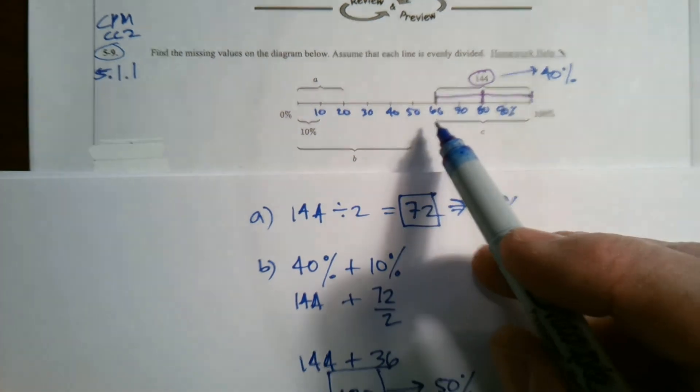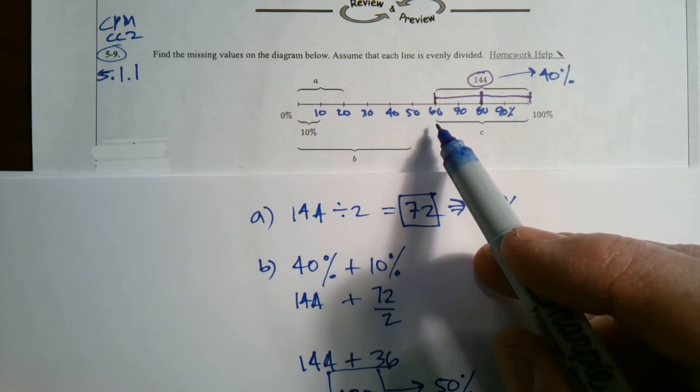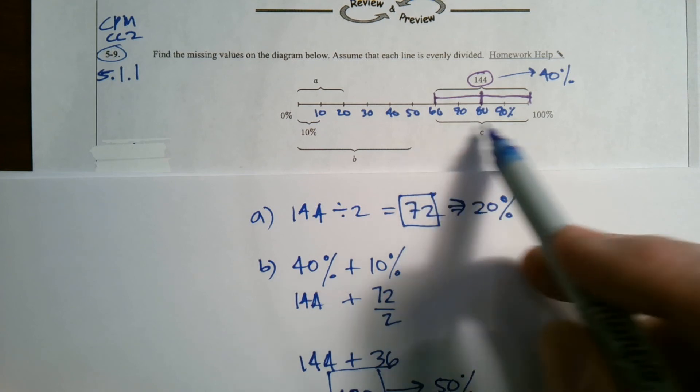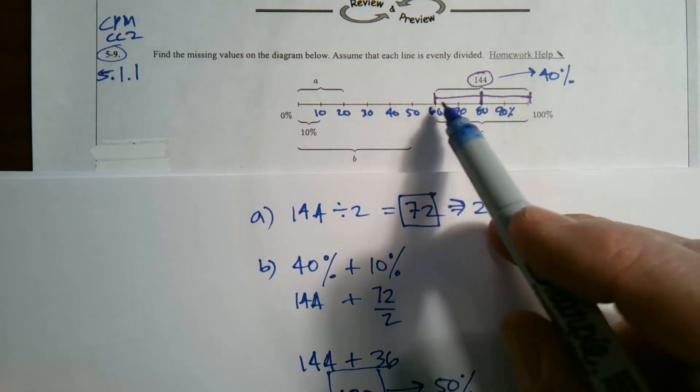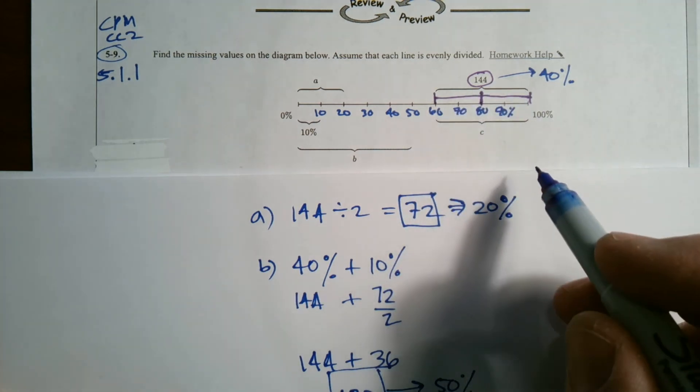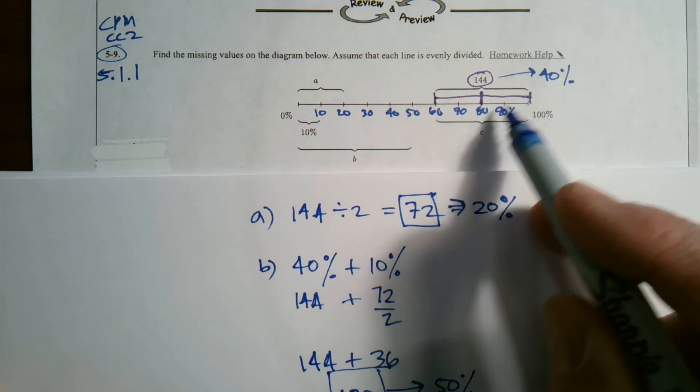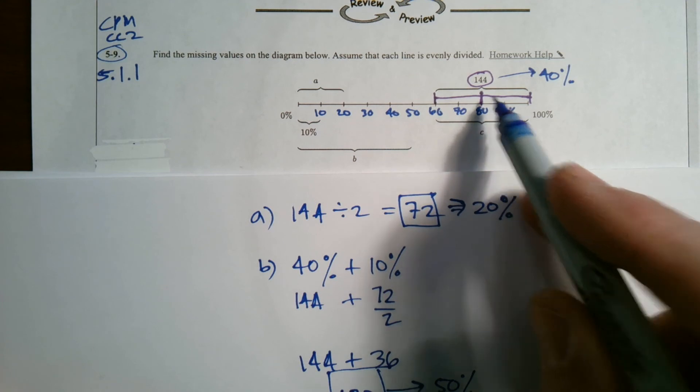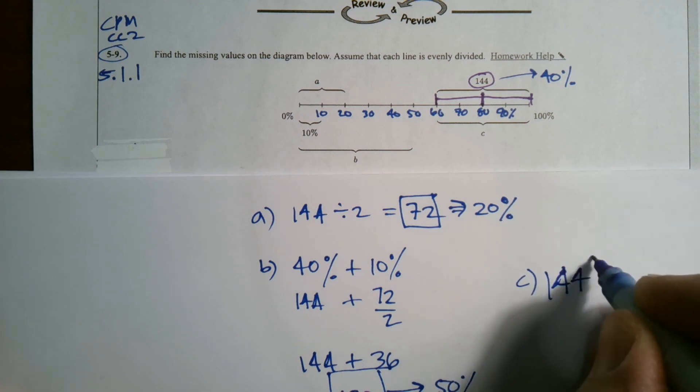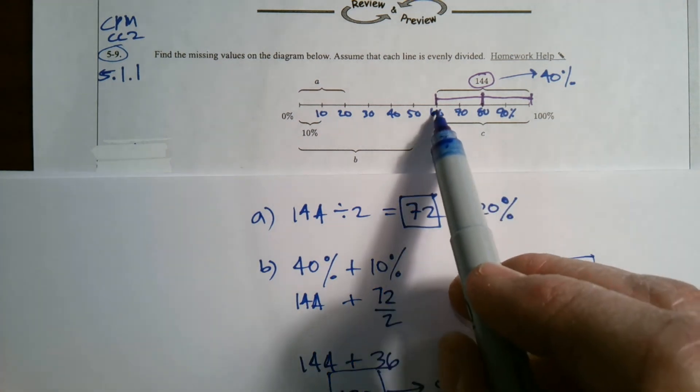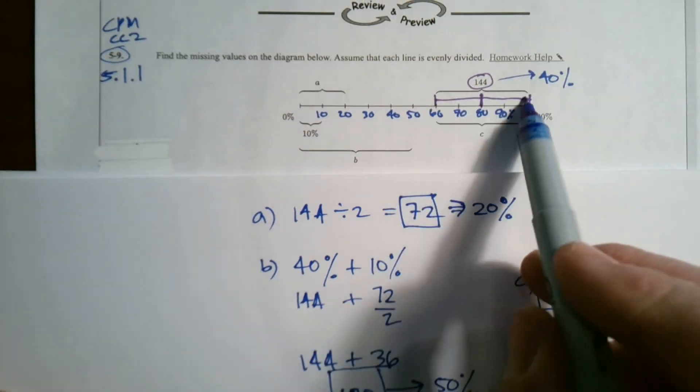So C, C is, oh look at that. Well that's basically from 60 to a hundred percent. Well, C is already labeled up top, isn't it? 144. So C in this case is going to be 144. They're kind of giving it to us. So C is equal to 144, based on the fact that it's the same length from 60 to 100, from 60 to 100.